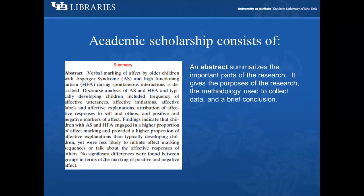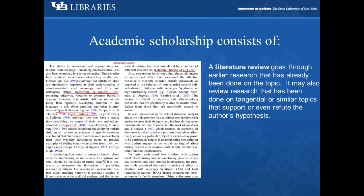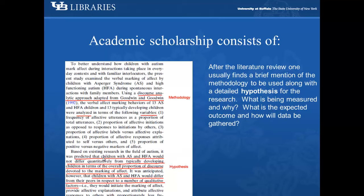An abstract summarizes the important parts of the research. It gives the purposes of the research, the methodology used to collect data, and a brief conclusion. A literature review goes through earlier research that has already been done on the topic. It may also review research done on tangential or similar topics that support or even refute the author's hypothesis. After the literature review, one usually finds a brief mention of the methodology to be used, along with a detailed hypothesis for research.